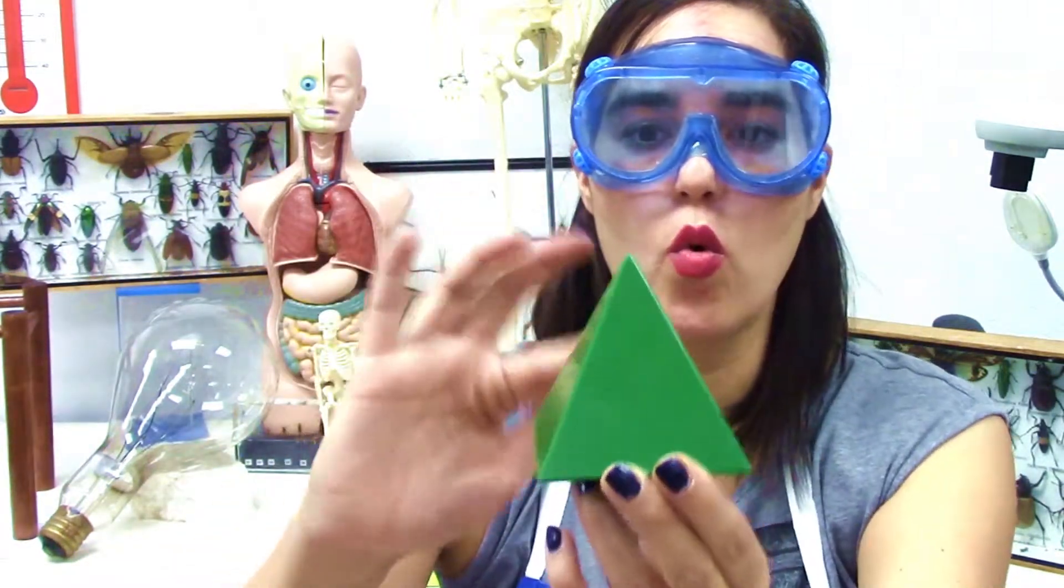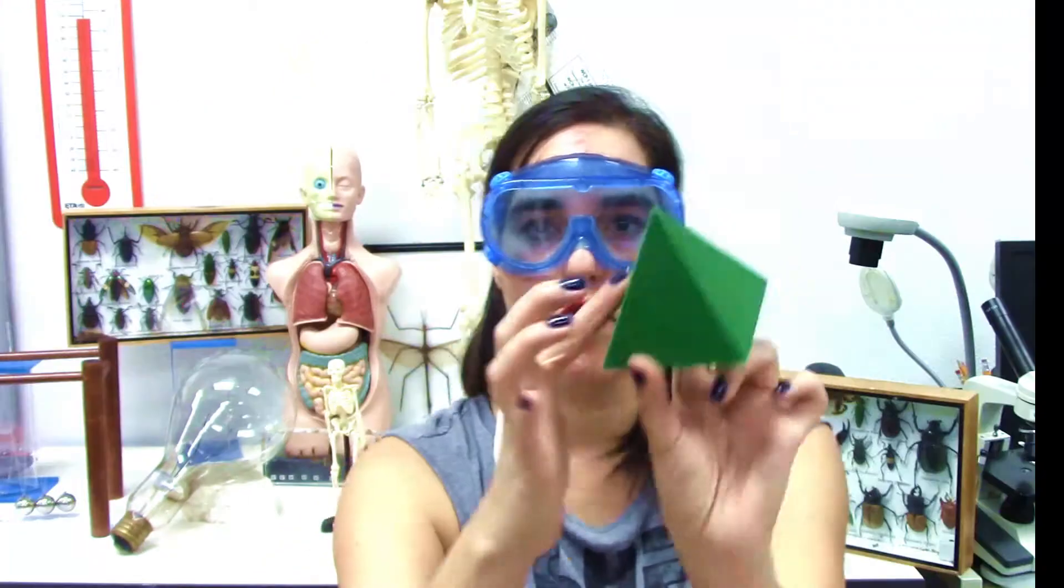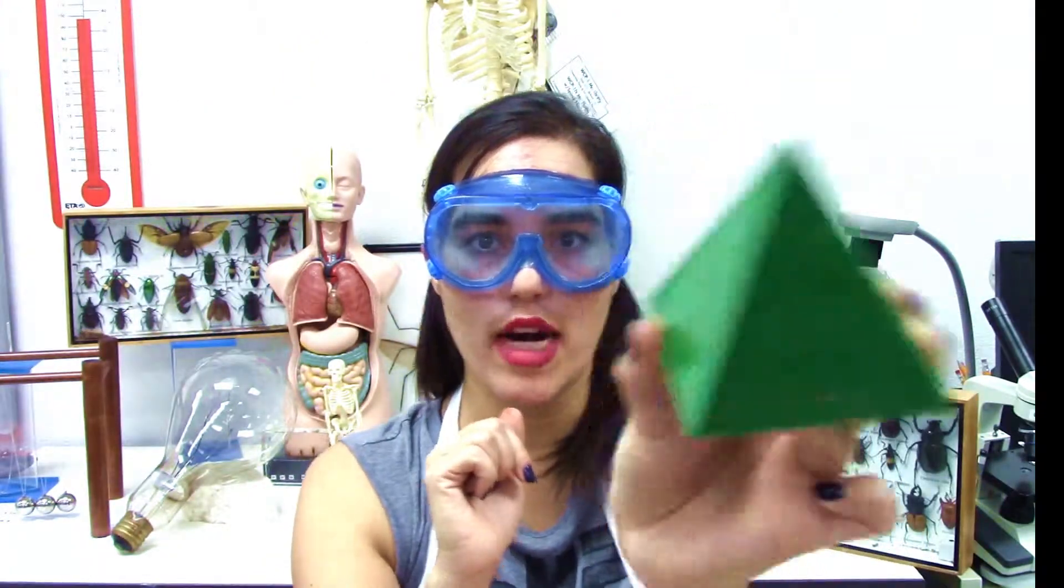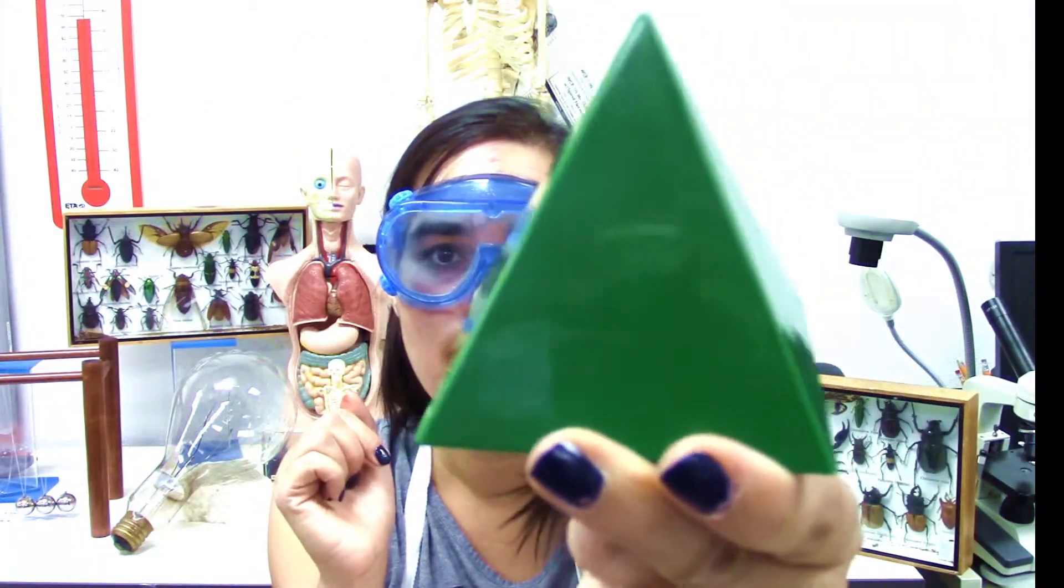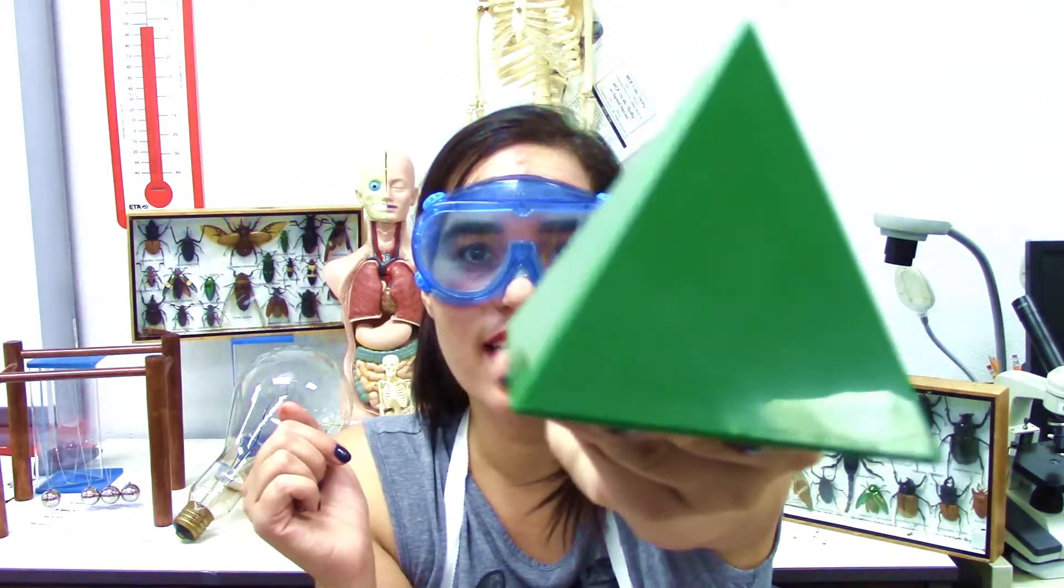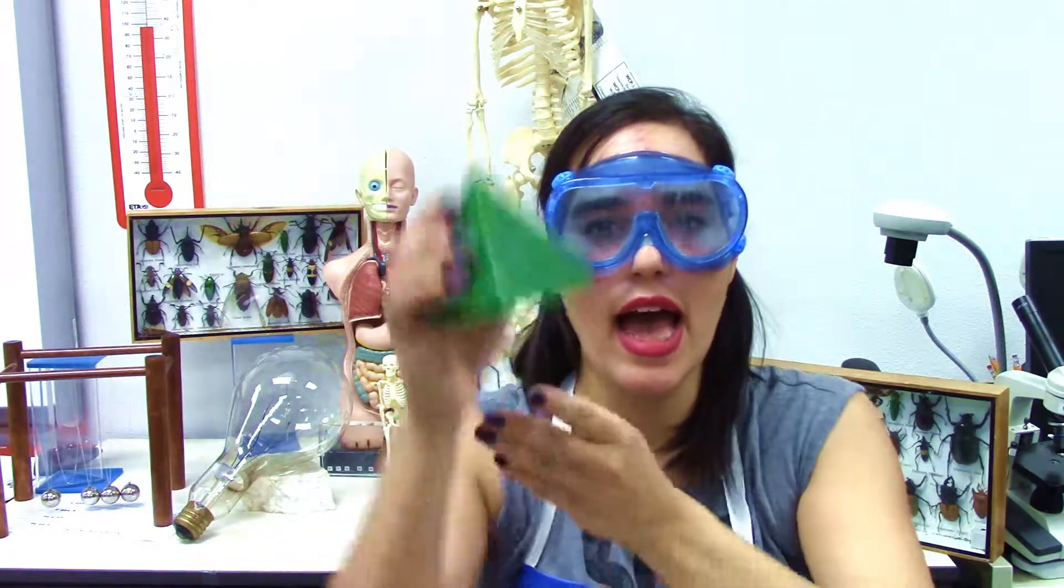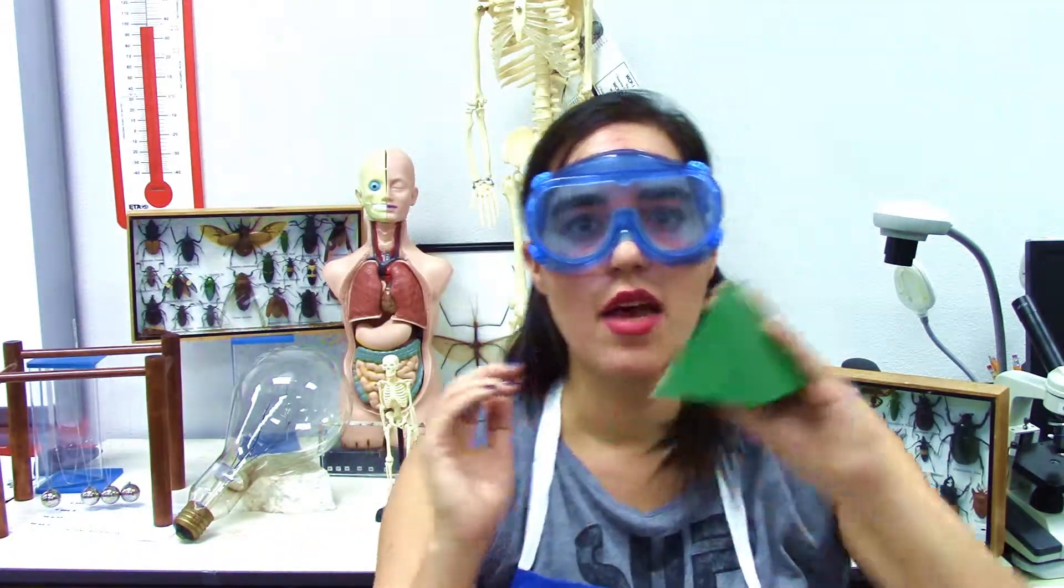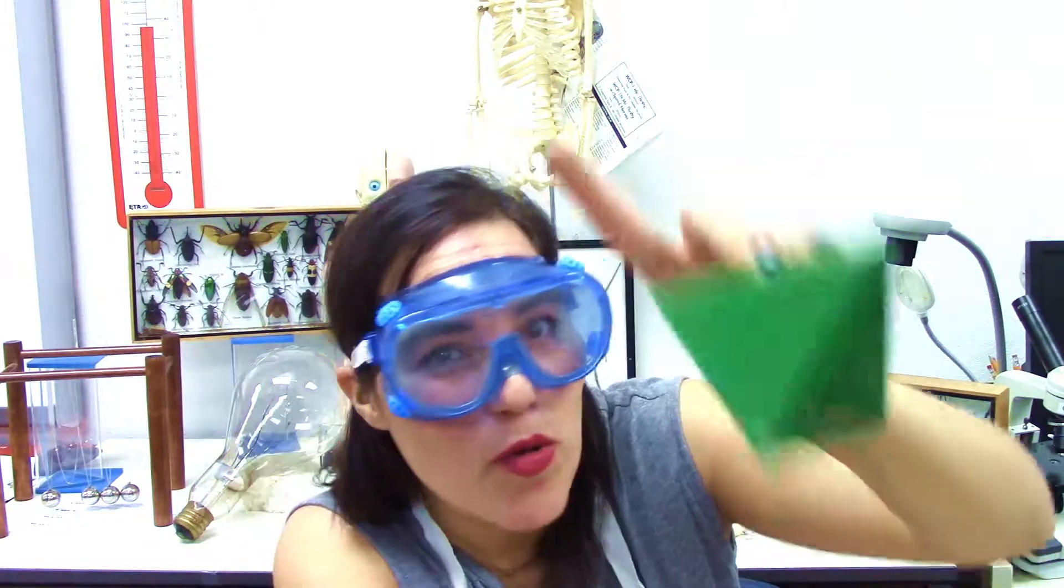And it has one, two, three, four more faces. There are what, guys? Look at this! Yes, this is the beautiful triangle. And why is this important? Because we wouldn't have pyramids in Mexico and in Egypt, and they are beautiful.